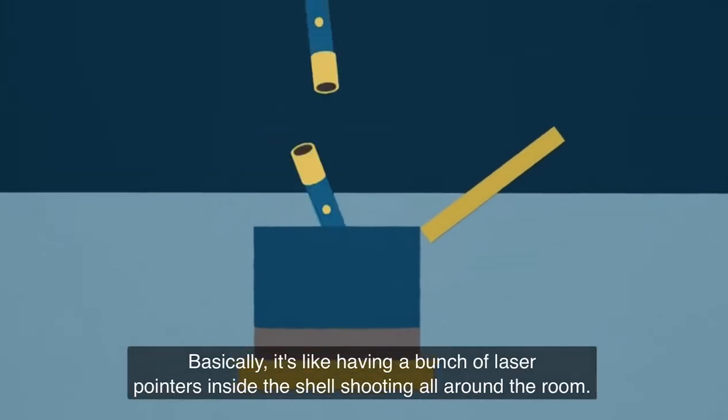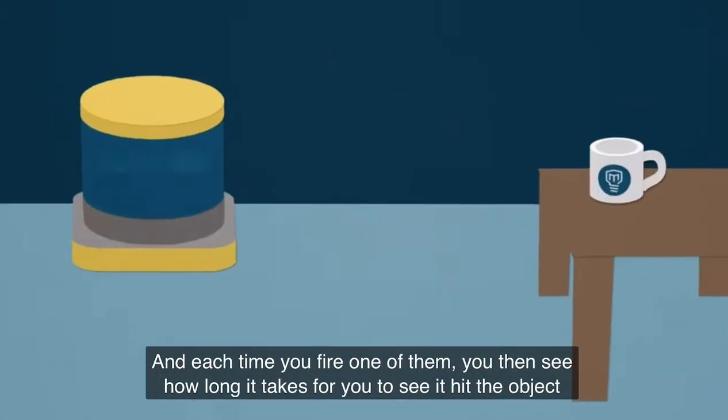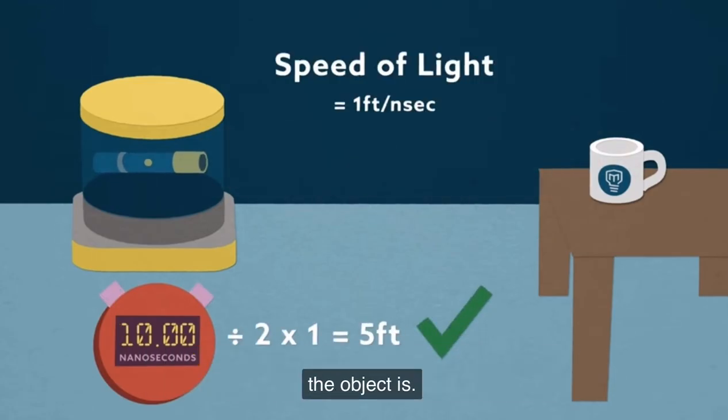Basically, it's like having a bunch of laser pointers inside this shell shooting all around the room. And each time you fire one of them, you then see how long it takes for you to see it hit the object it's pointed at. And since we know the speed of light, if we measure that time, it will tell us how far away the object is.